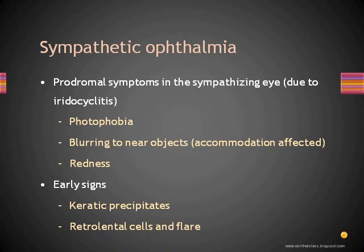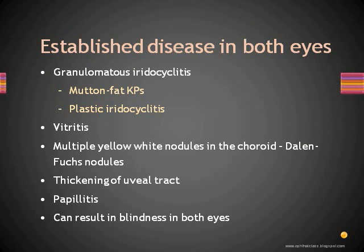Early signs of sympathetic ophthalmia are features of iridocyclitis in the fellow eye. The patient is usually being treated for penetrating injury of one eye when problems develop in the other eye. Prodromal symptoms in the sympathizing eye are photophobia, blurring of near objects (since cyclitis affects accommodation), and redness. Early slit lamp signs include keratic precipitates and retrolental cells and flare. Involvement of the other eye while the injured eye is still inflamed should raise suspicion of sympathetic ophthalmitis. Established disease in both eyes appears like granulomatous iridocyclitis, with mutton-fat keratic precipitates and plastic iridocyclitis.